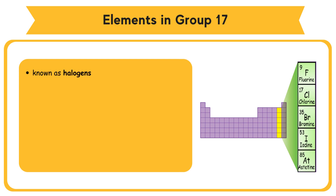The Group 17 elements are: Fluorine (F), Chlorine (Cl), Bromine (Br), Iodine (I), and Astatine. Halogens exist as diatomic molecules in their free state.